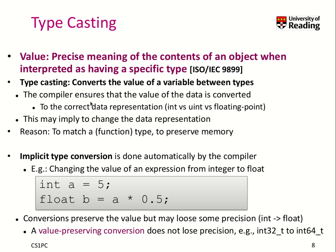Next let's talk about values and typecasting. The value of a variable is the meaning of the contents of the object when you interpret it as having a specific type. Here we see the number 5 assigned to an integer type variable 'a'. So 'a' is now an object of type integer — whatever this number was, it will be converted and interpreted as type int, which is a signed two's complement number.